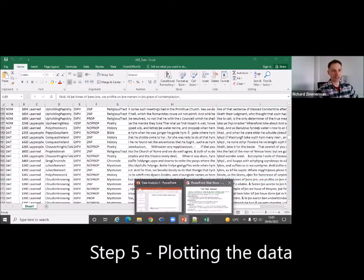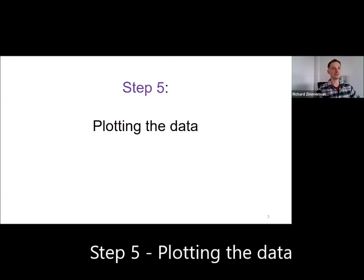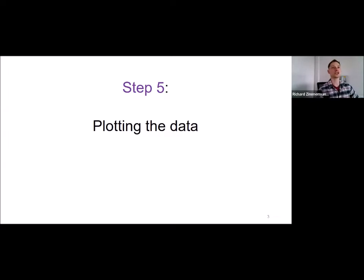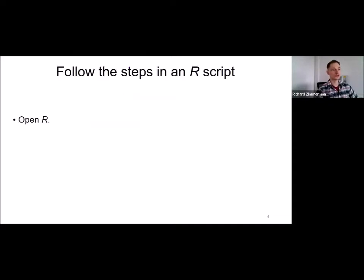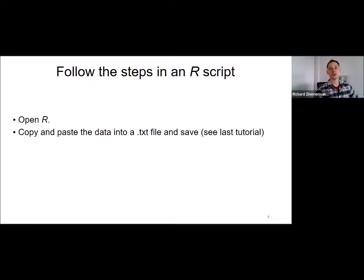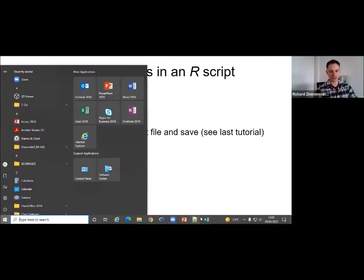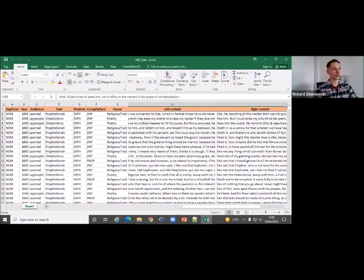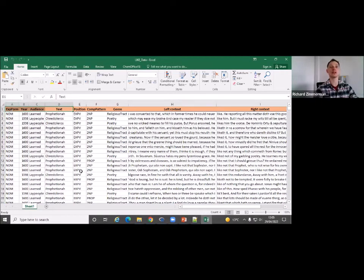The next step is to plot the data. We want to make a plot that shows on the x-axis time and on the y-axis the proportion of the innovative form — nominative experiencers. In order to do this, you open R, and as we discussed last time, don't include the entire Excel data sheet, because things can easily go wrong. There are Middle English texts in there with special characters that could cause problems. You only want to copy and paste the relevant data — the dependent variable, year, audience, and text.